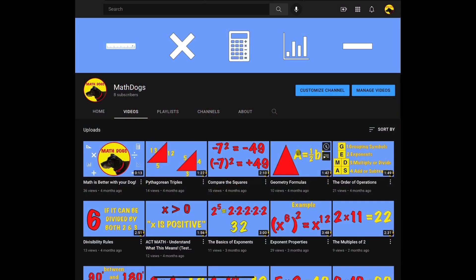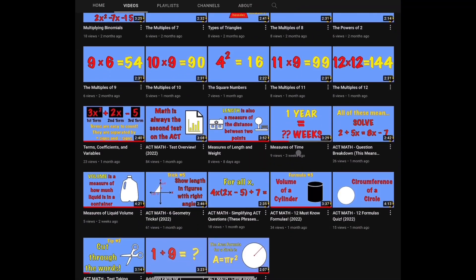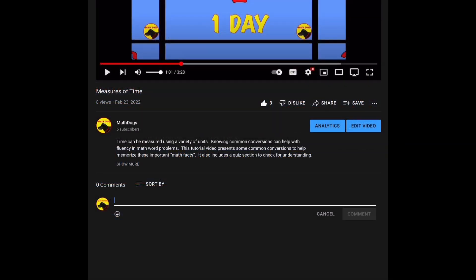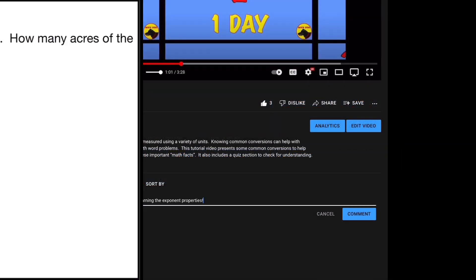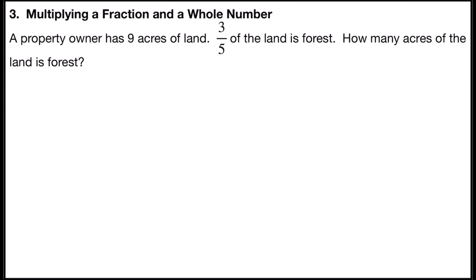Welcome back to Math Dogs. If you're new to the channel, please comment, like, and subscribe. If you have any questions, please comment down below. Problem number three is multiplying a fraction and a whole number. It says a property